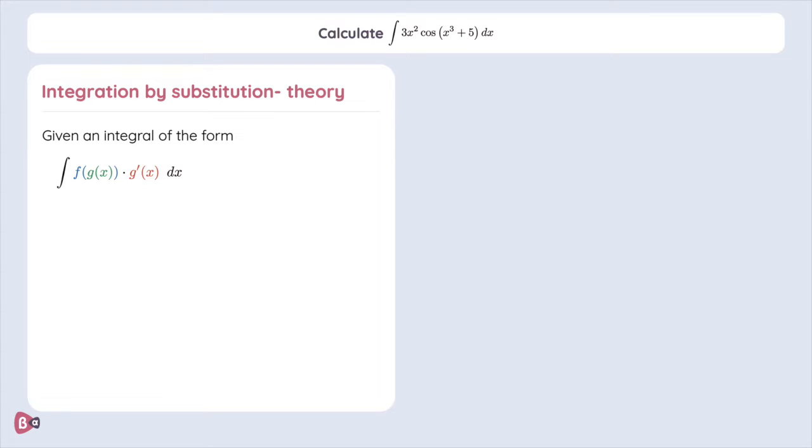Now, this sounds complicated, but bear with us. What we do is we write u in terms of g of x. And doing so, we can rewrite the integral in terms of u and du. Lo and behold, this gives us the very simple expression: integral of f of u, du.